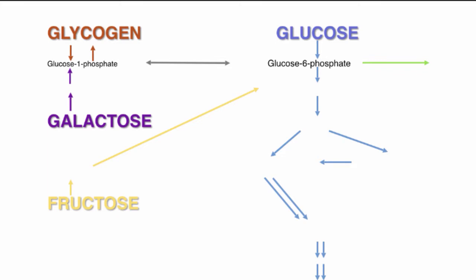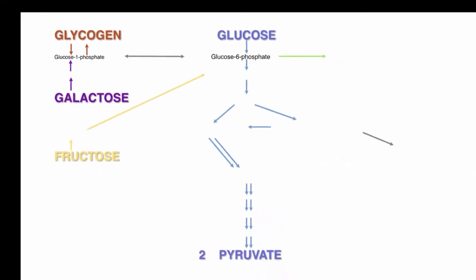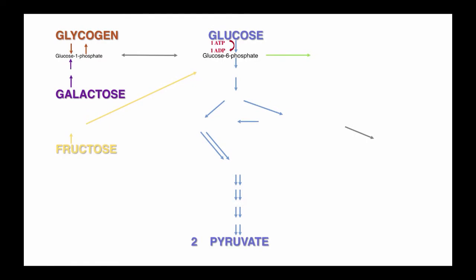Glucose gets turned into glucose 6-phosphate in one step. However, with glycogen, it needs two steps. First, glycogen needs to be converted to glucose 1-phosphate, which just means the phosphate is on carbon number 1, and then it changes into glucose 6-phosphate. Glucose requires energy for this to happen, but glycogen does not. The energy needs one ATP to transfer the phosphate onto the glucose, making it glucose 6-phosphate.